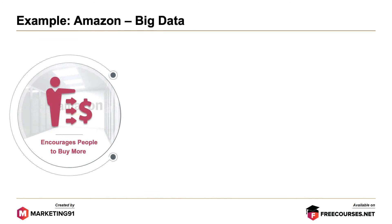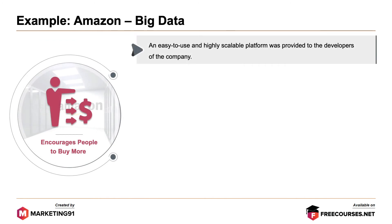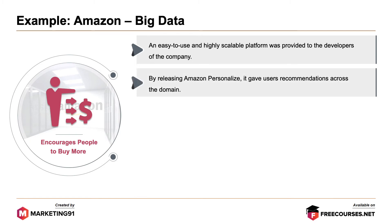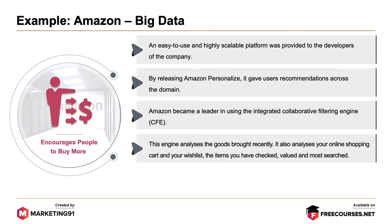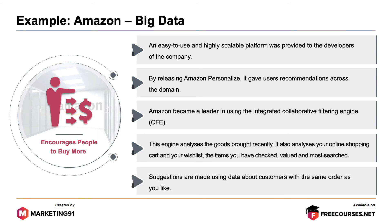Next, it encourages people to buy more. An easy-to-use and highly scalable platform was provided to developers of the company. By releasing Amazon Personalize, it gave users recommendations across the domain. Amazon became a leader in using the integrated collaborative filtering engine, which analyzed goods brought recently, your online shopping cart and wishlist, the items you have checked, valued and most searched. Suggestions are made using data about customers with the same order history as you.